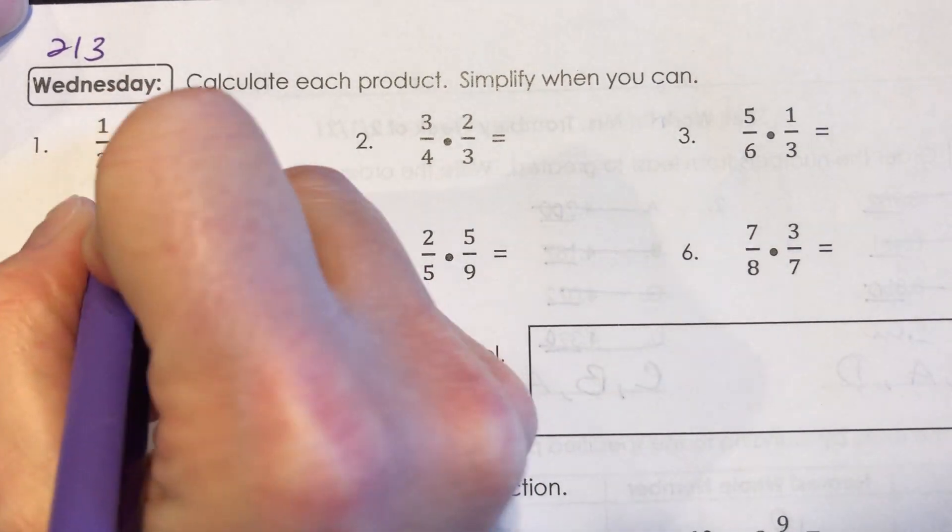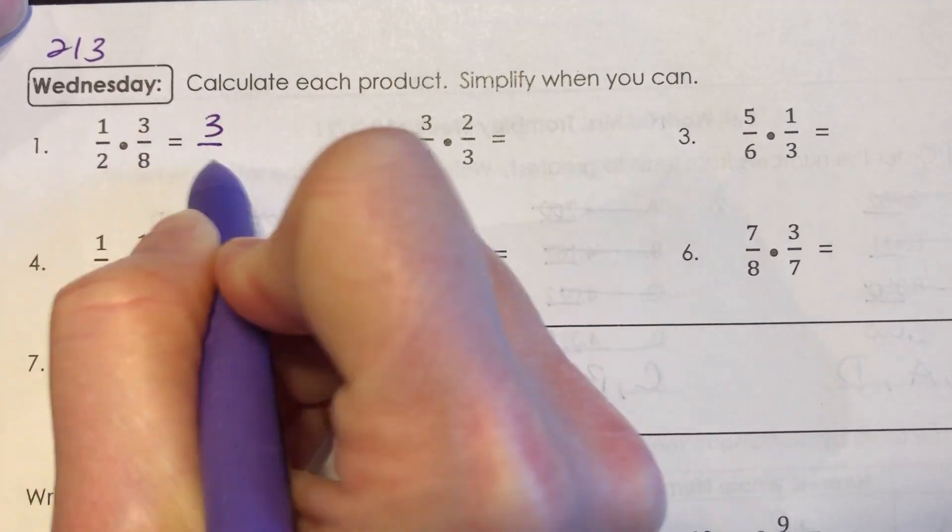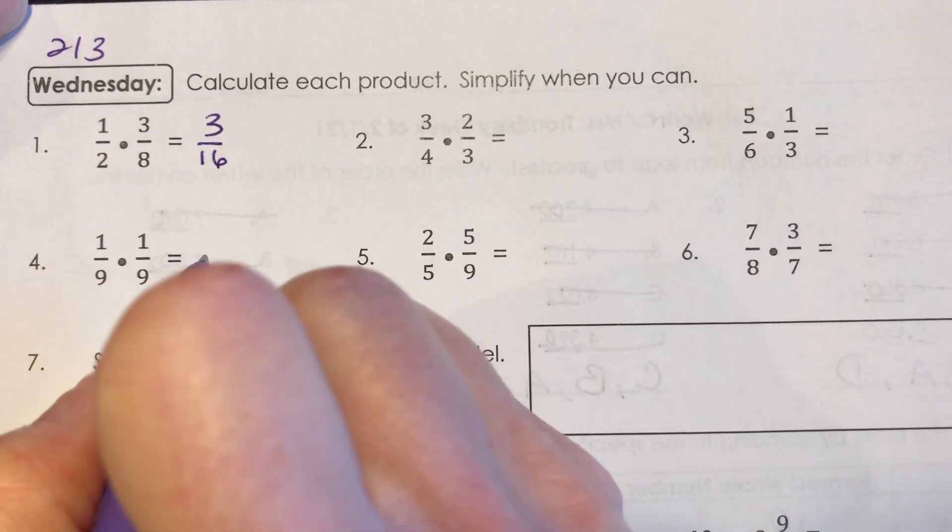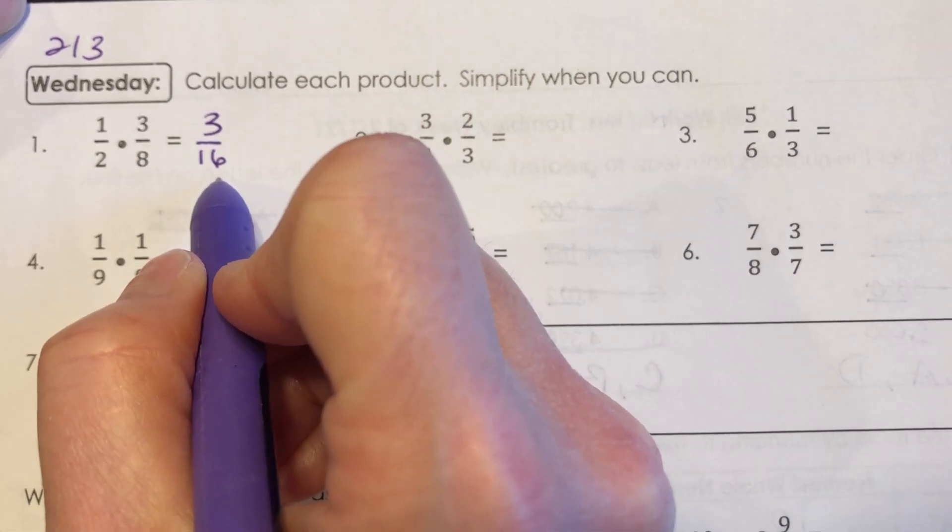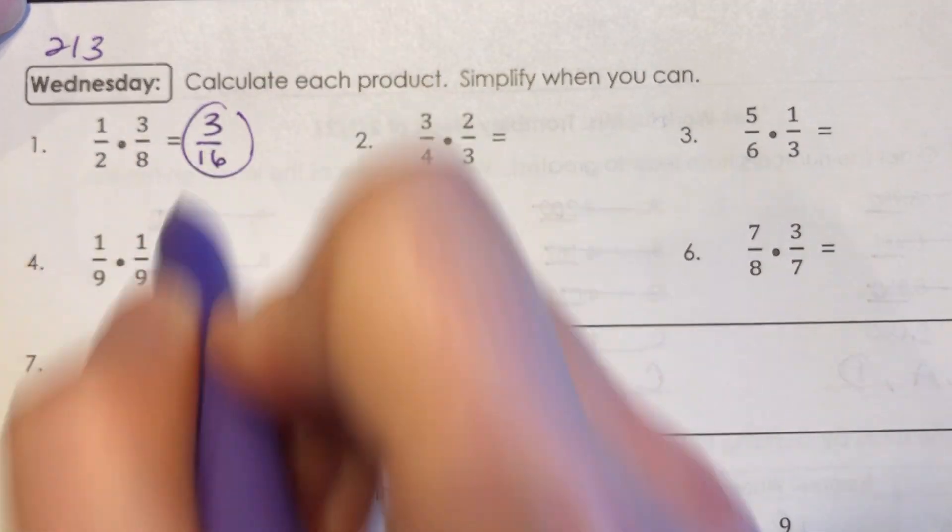So for number 1, 1 times 3 is 3, 2 times 8 is 16. And there's not a number other than 1 that goes into 3 and 16, so that is set. That's simplest form.